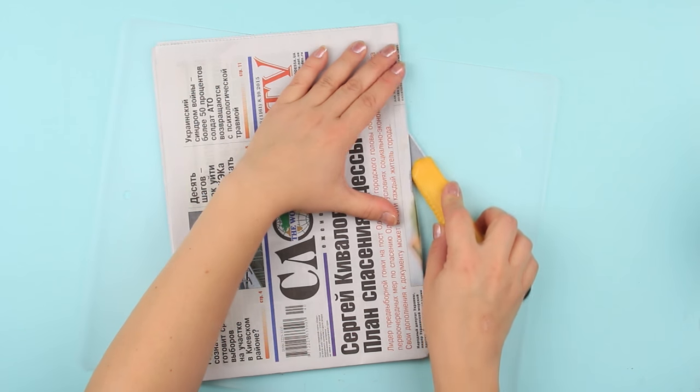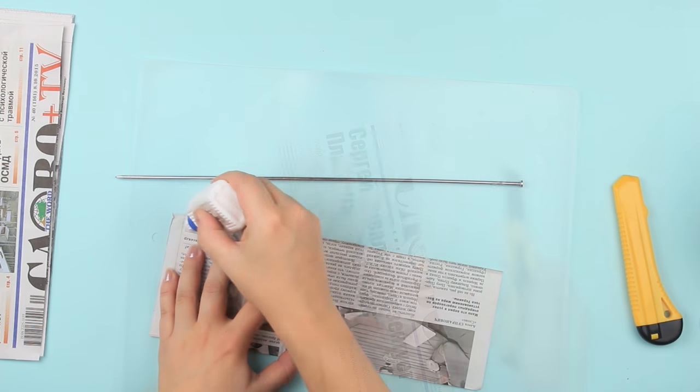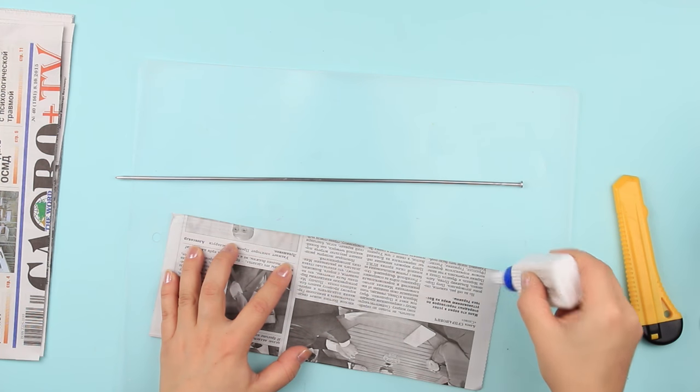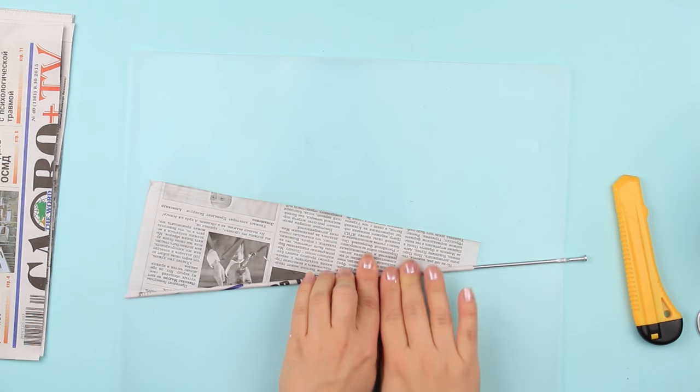Now, make newspaper tubes by cutting a folded spread into 8 parts. Prepare the needed quantity and start weaving around the base.